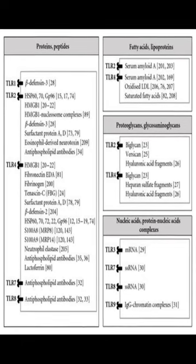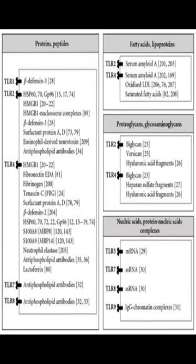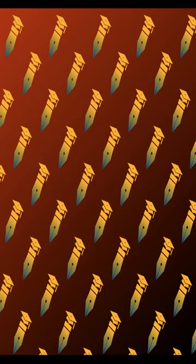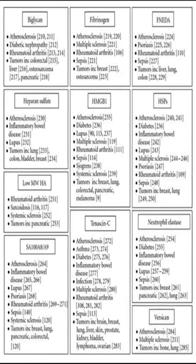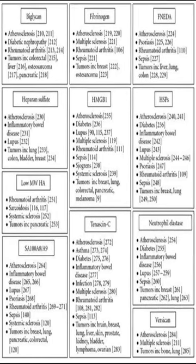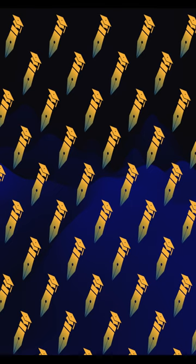Damage-associated molecular patterns, DAMPs, are intracellular and extracellular molecules released upon tissue damage, which activate toll-like receptors, TLRs, to induce inflammatory gene expression for tissue repair.